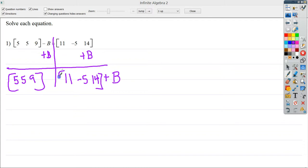And from this point, I need to get rid of plus this matrix. So I'm going to subtract this matrix on both sides. Those cancel.